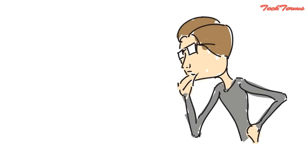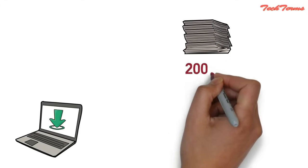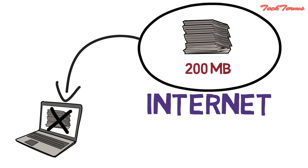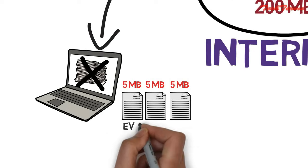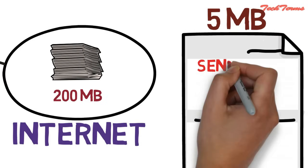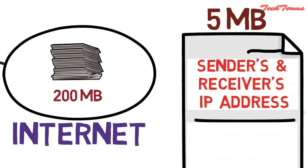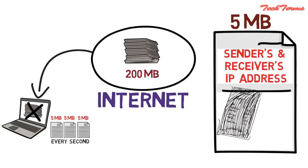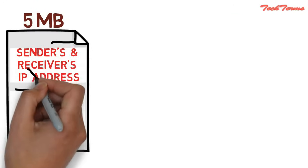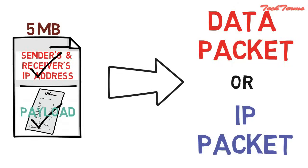Before starting with firewall types, you should know what data packets are. When we want to download a file of size say 200 MB from the internet, we will not receive the entire 200 MB data at once, but we will receive small packets — say 5 MB every second. Some of this 5 MB packet is occupied with information like which computer is sending the data and which computer is receiving the data. The remaining portion contains the part of the actual data we want to download. So part of the actual data plus some information together forms a data packet or IP packet, and this part of actual data is called payload.